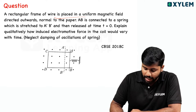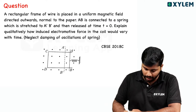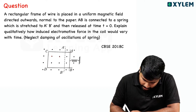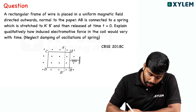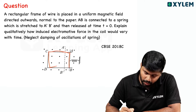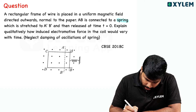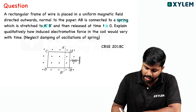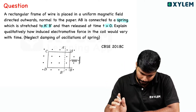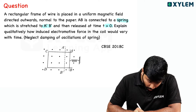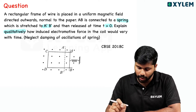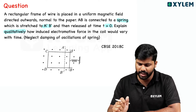A rectangular frame of wire is placed in a uniform magnetic field directed outwards — that means dots, directed outwards, normal to the plane. Side AB is connected to a spring which is stretched to A'B' then released at time t equals zero. So part AB is oscillating. Explain quantitatively how the induced electromagnetic force in the coil would vary with time, neglecting damping.